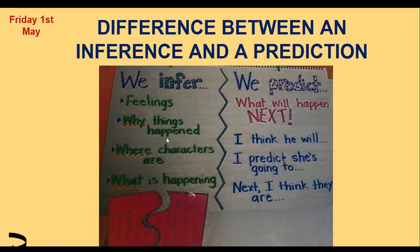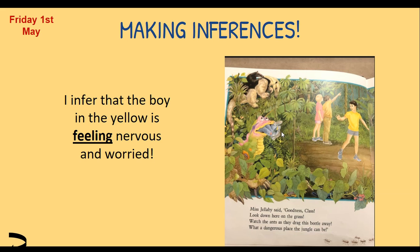We can also infer why things have happened, and we can infer where the characters are. Pictures will be really helpful for that, but if the page said — with no pictures — 'the waves were crashing into the sand and there were umbrellas and people everywhere', where can you infer that I am? At the beach! I didn't say that I was at the beach, but we are using the clues. What is happening is also something else that you can infer.